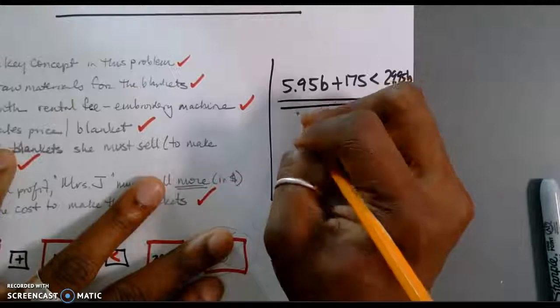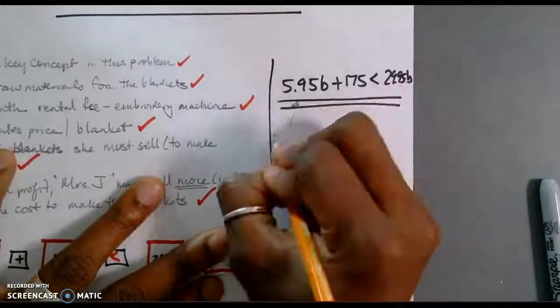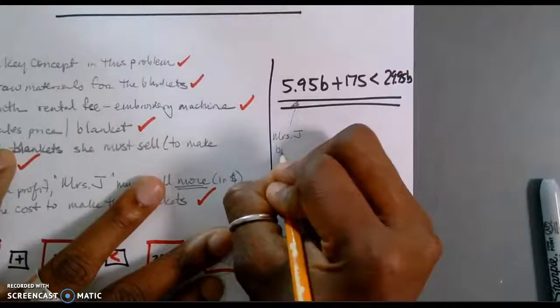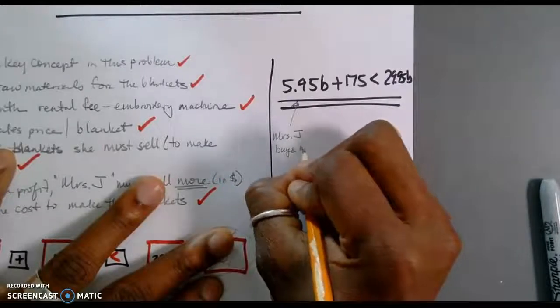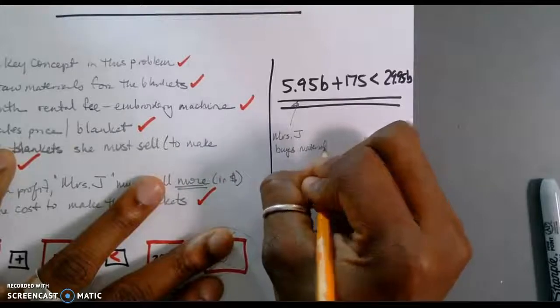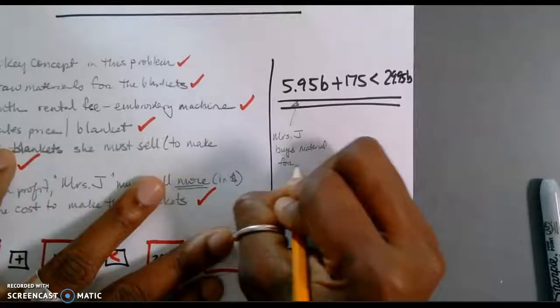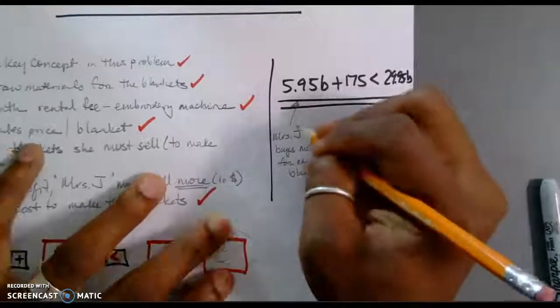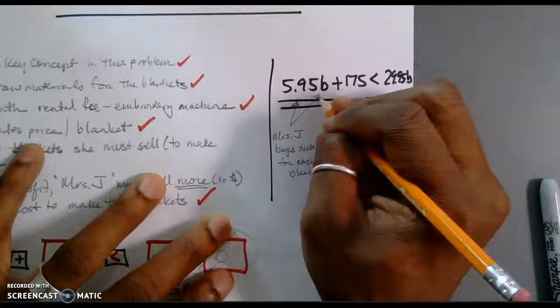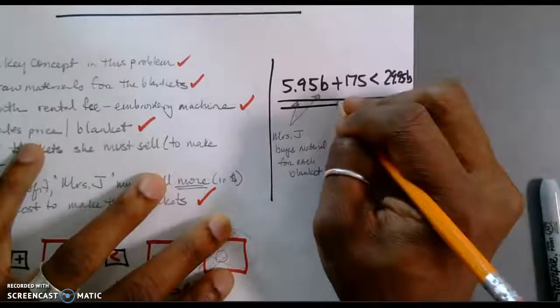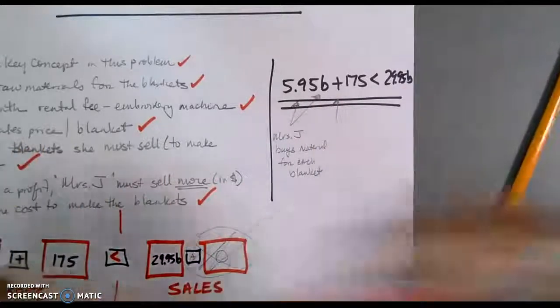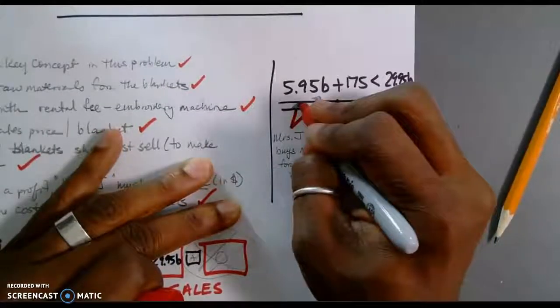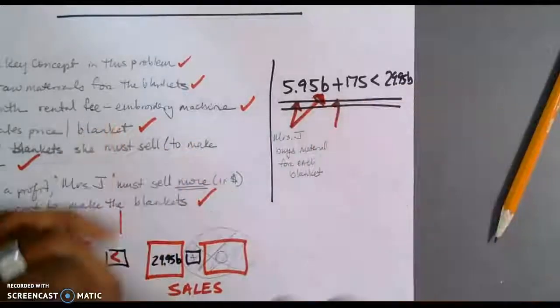I'm going to write here, Mrs. J, what we call her, buys material for each blanket. And for each blanket is directly tied to B.